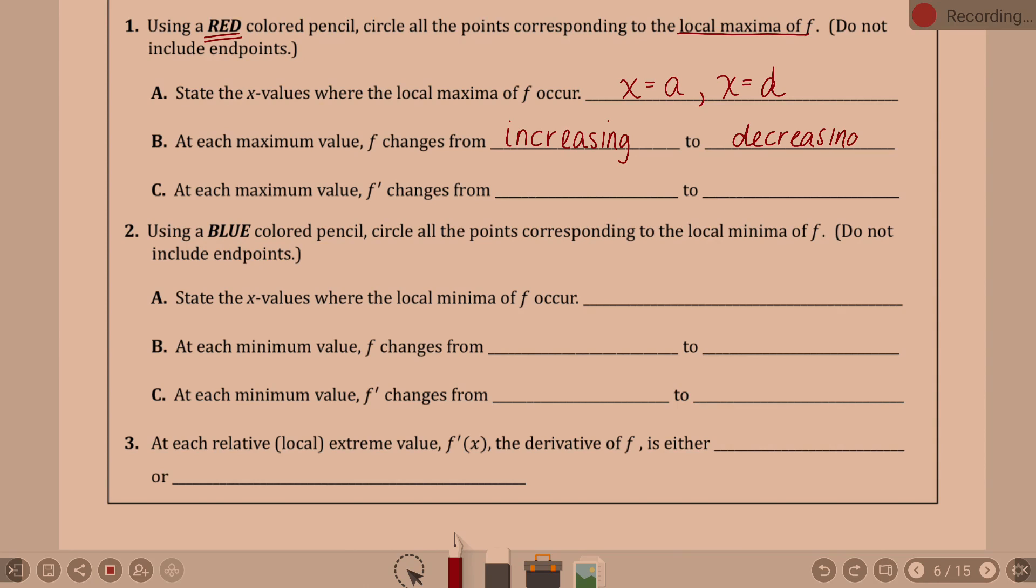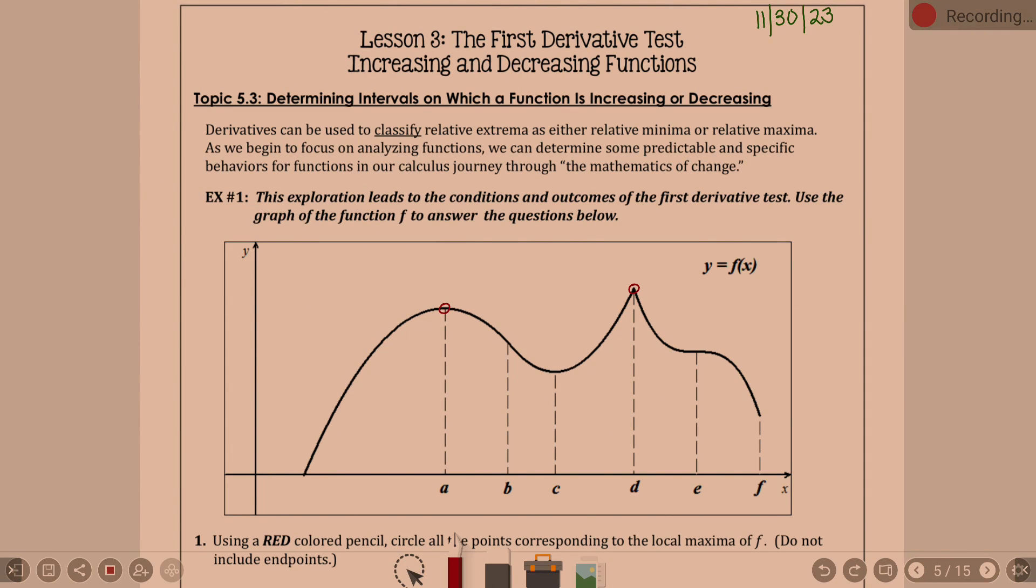Now the connection here: at each max value, f prime changes from what to what? Well, f is increasing and decreasing. What is the derivative here? Zero. As we approach it and leave it, since your graph is increasing, what type of derivative do you have? What's the sign on my derivative? Positive. No matter where I'm at along this left side, my derivative is positive.